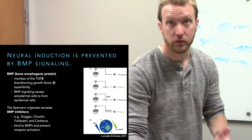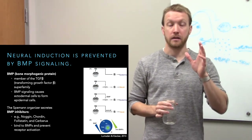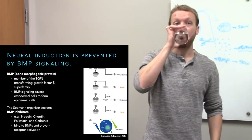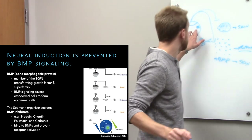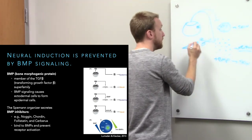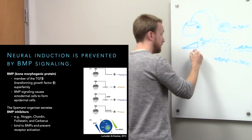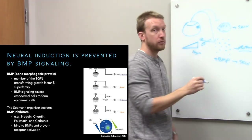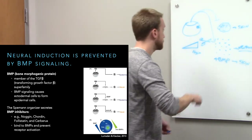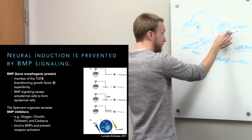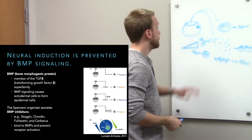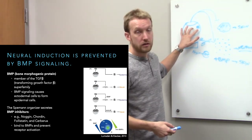Genetically repressing BMP signaling by expressing dominant negative BMP receptors eliminates induction of epidermis. The organizer creates a gradient of BMP inhibitors — Noggin, Chordin, Follistatin, Cerberus — which are high near the organizer. These proteins bind up BMPs so they can't stimulate their receptor. Cells near the organizer are therefore induced with a neural cell fate.